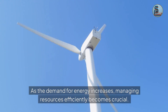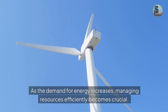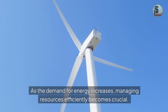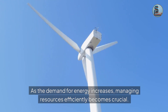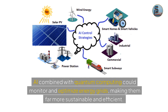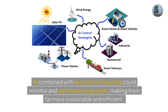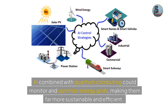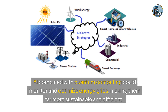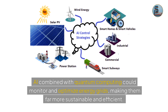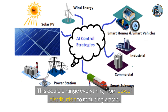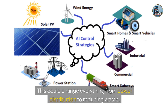As the demand for energy increases, managing resources efficiently becomes crucial. AI combined with quantum computing could monitor and optimize energy grids, making them far more sustainable and efficient. This could change everything from power distribution to reducing waste.